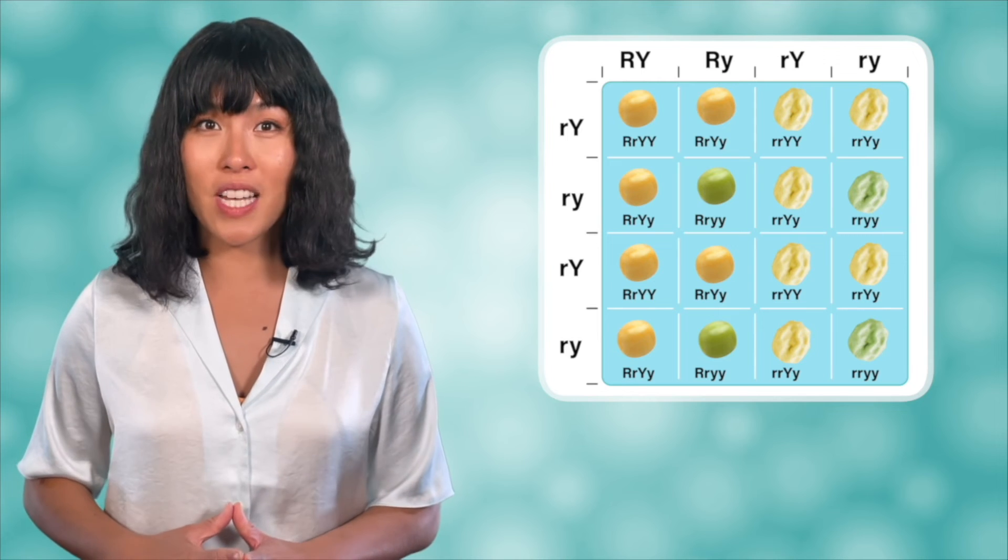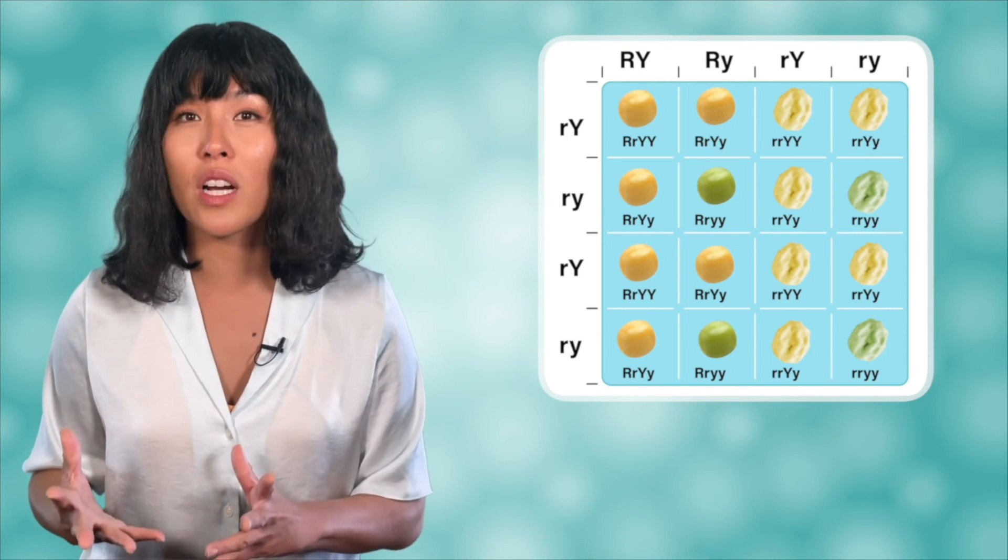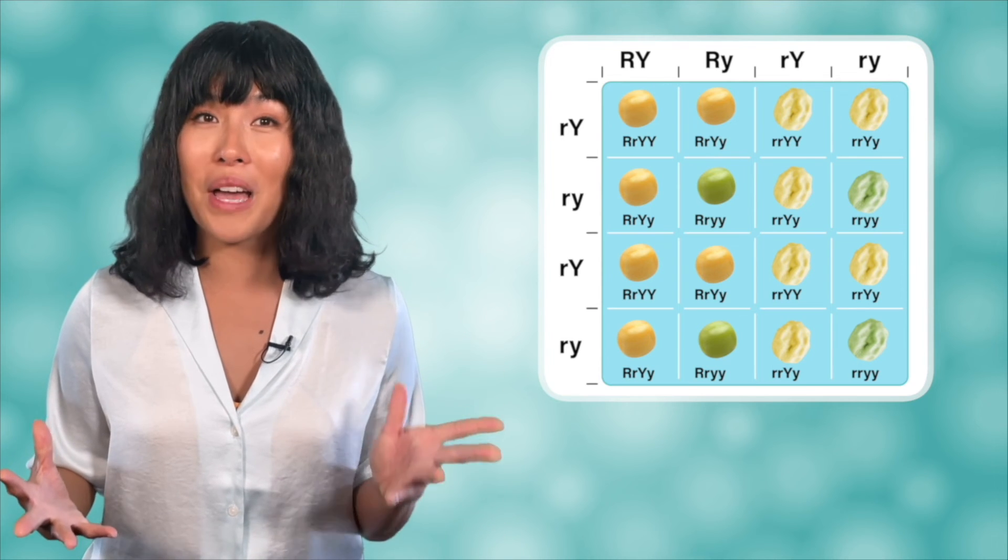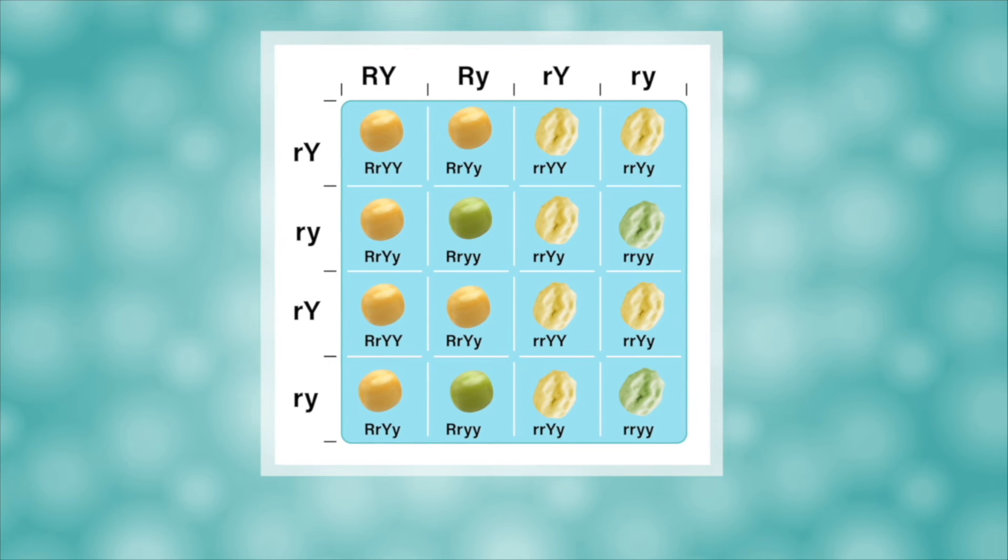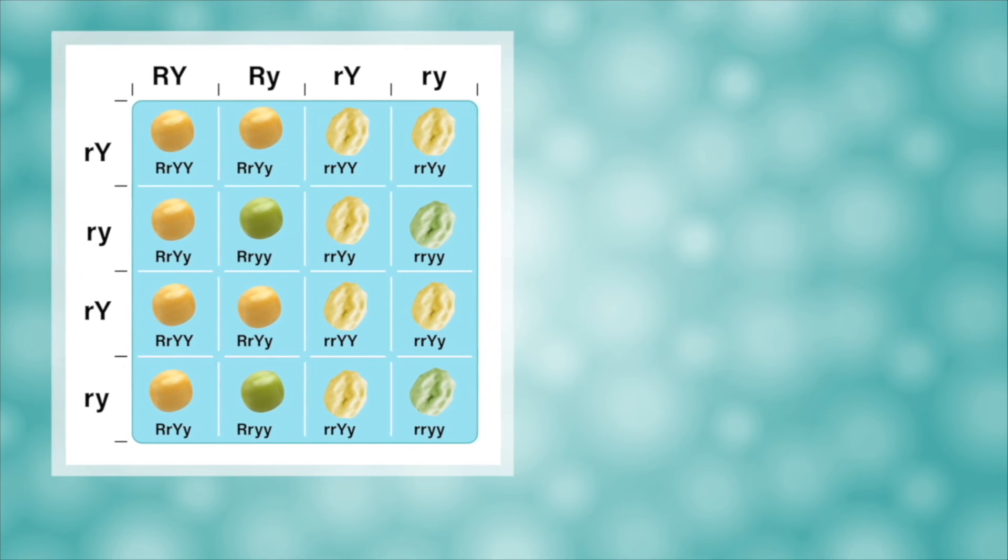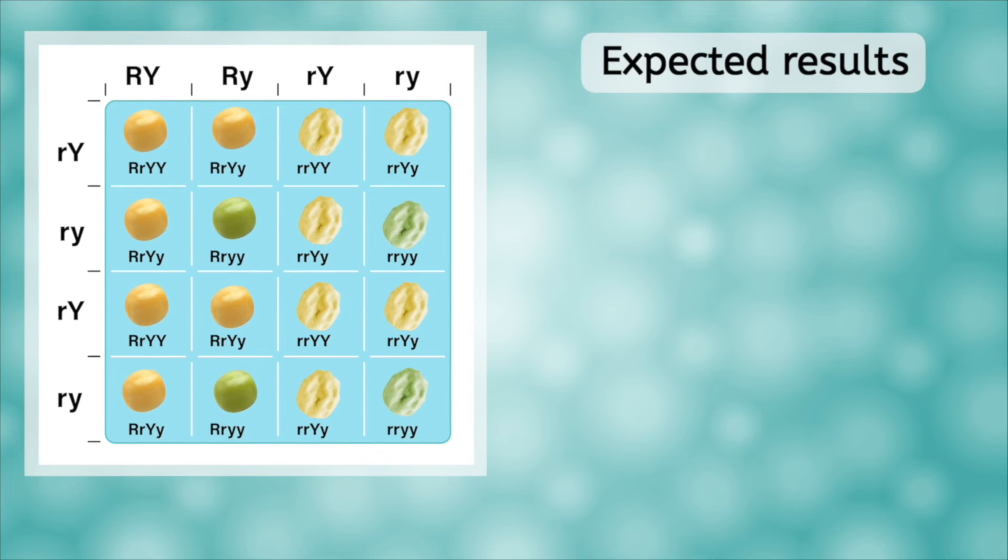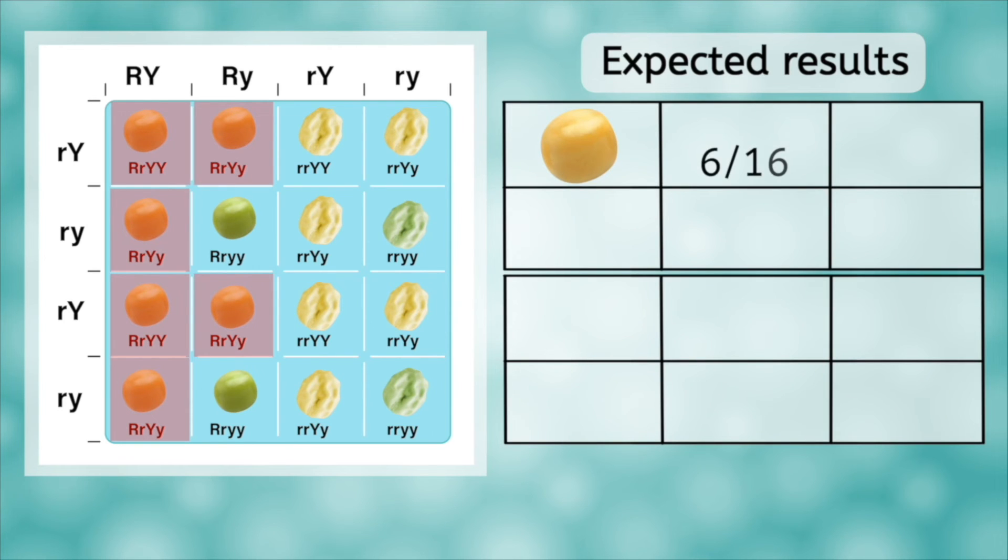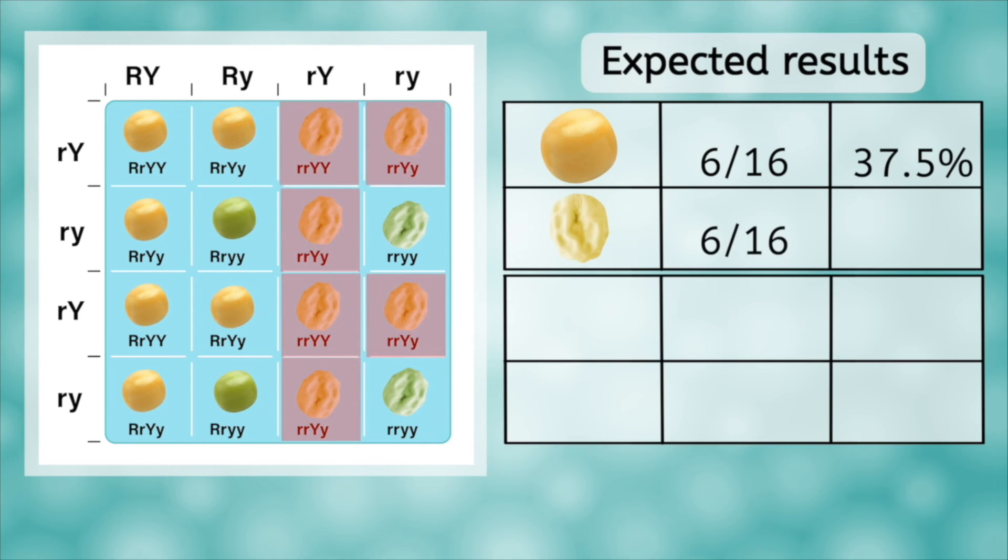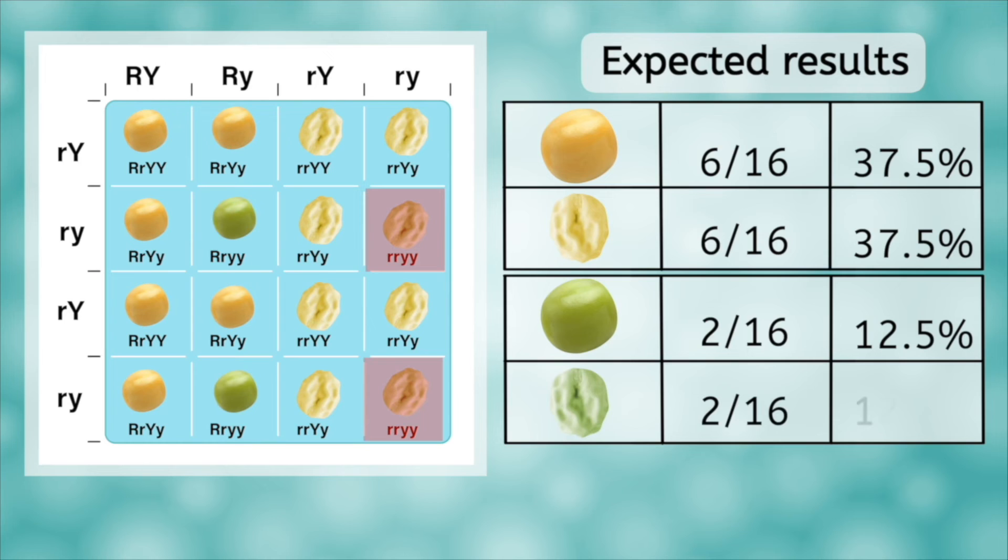But filling in the table is not the most important task here. What we really want to know is whether the results we get from the Punnett square will match the results we get from a real-life test. To find percentages that we can compare, we need to count the number of each phenotype that was present in the table. These will be our expected results. We'll start with the dominant traits, round and yellow. There were six boxes out of 16 that were round and yellow. There were also six out of 16 boxes that were wrinkled and yellow. Then two boxes out of 16 that were round and green, and two boxes that were wrinkled and green.